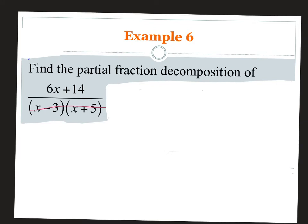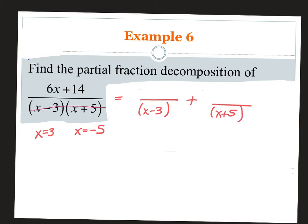For the first problem: find the partial fraction decomposition. The first thing you do for every single one of these problems is factor the denominator. Is this denominator already factored? Yes. So I'll write x equals 3 and x equals negative 5 — you'll need that later. The denominator is broken into two binomials, so I'll write A over (x minus 3) plus B over (x plus 5). If I had three pieces, I'd use A, B, and C.